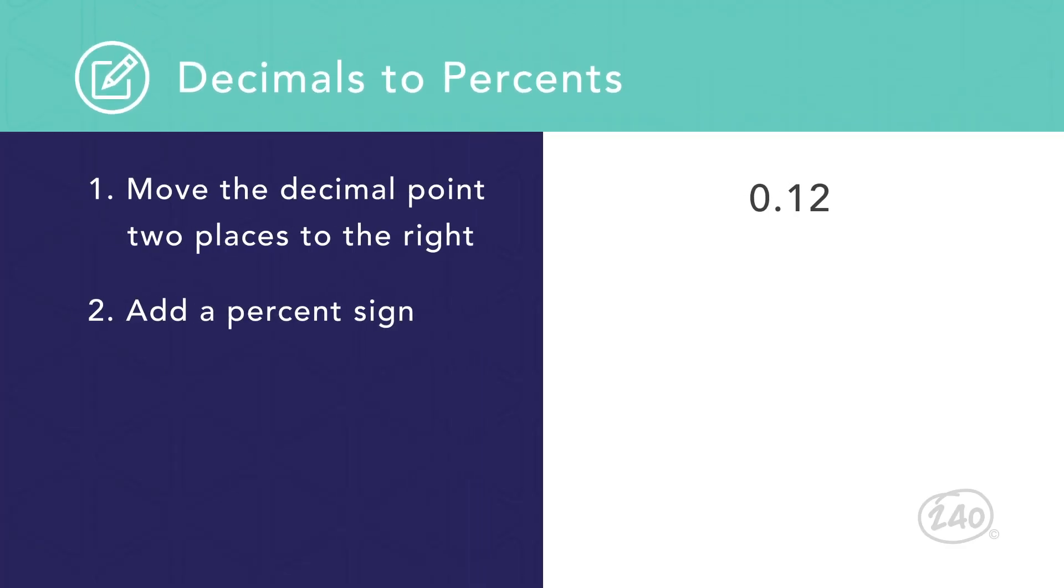To convert a decimal into a percent, move the decimal place twice to the right by multiplying the number by one hundred. Then, write the percent symbol at the end.